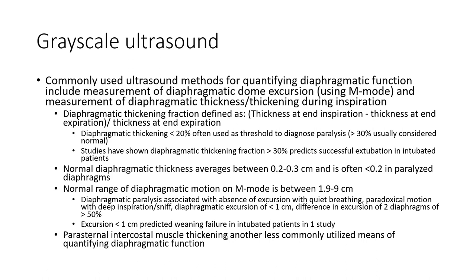Commonly used ultrasound methods for quantifying diaphragmatic function include measurement of diaphragmatic dome excursion and measurement of diaphragmatic thickening during inspiration. The diaphragmatic thickening fraction is defined as: thickening at end-inspiration minus thickening at end-expiration, divided by thickening at end-expiration. Normal diaphragmatic thickness averages 0.2 to 0.3 cm. Parasternal intercostal muscle thickening is a less common means of quantifying diaphragmatic function.